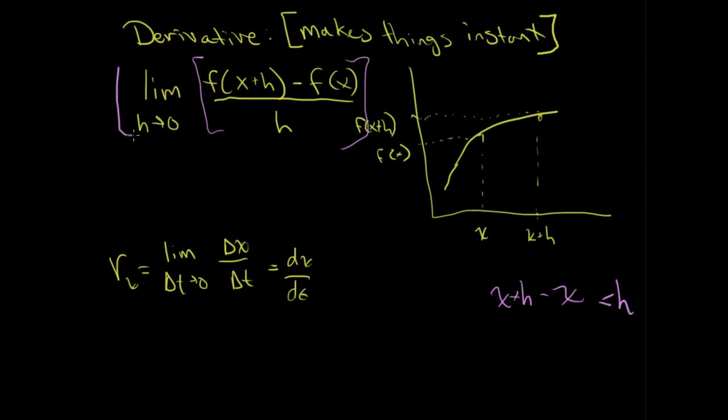By applying this limit and making this h approach zero, that's when you're becoming instant. That's when you're applying the derivative. So basically, if you look over here, you have x and x plus h. f of x plus h and f of x. The slope of those lines, at the moment that it stands, without applying this limit, is the secant line in here.